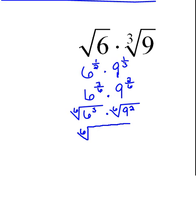We're talking about 6th root of 6 cubed, which would be 216, times 9 squared, which would be 81. That's going to be a big number. When we multiply those two together, we have the 6th root of 216 times 81 would be 17,496.